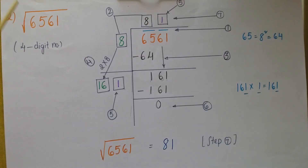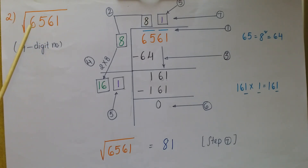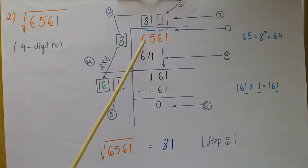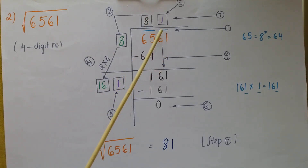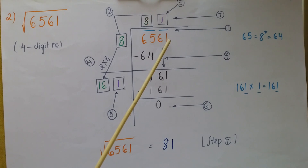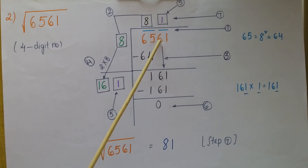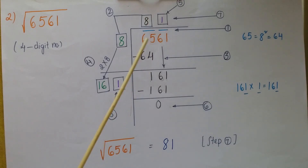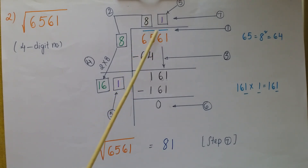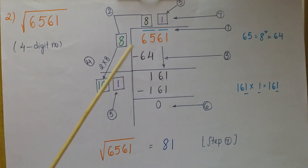In this example, I am going to show how to find the square root of a four-digit number. To find the square root of 6561, first write the number and place bars over every two digits starting from the units digit. The unit digit is 1, so place a bar over 61, and then a bar over 65.